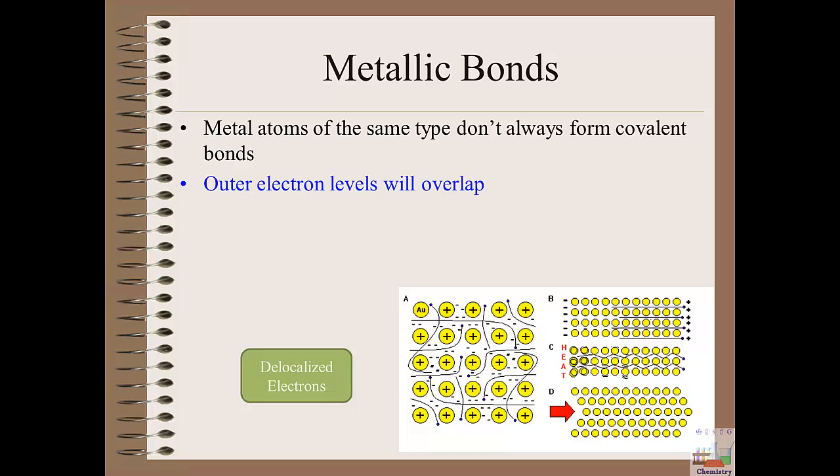While the outermost valence levels are going to overlap like we see in covalent bonding, metals have a very loose hold on their valence electrons in those outer levels as compared to non-metals which have a very tight hold on their valence electrons. And it's due to this loose hold on their valence electrons that gives metallic bonding its unique characteristics.